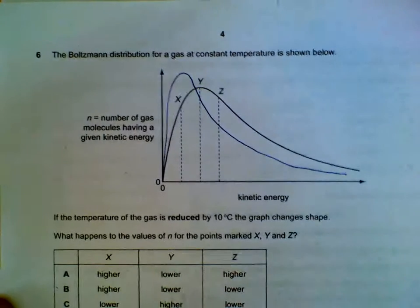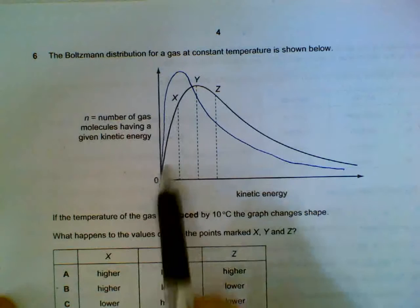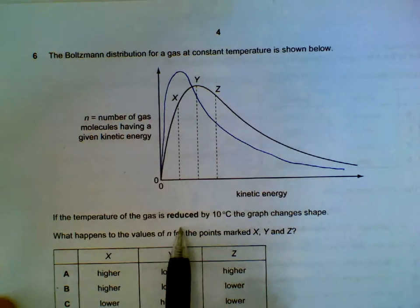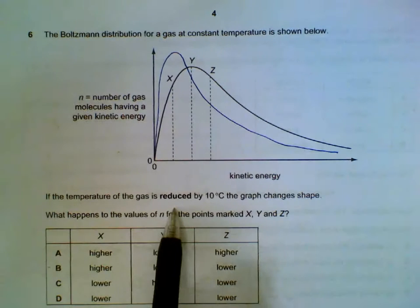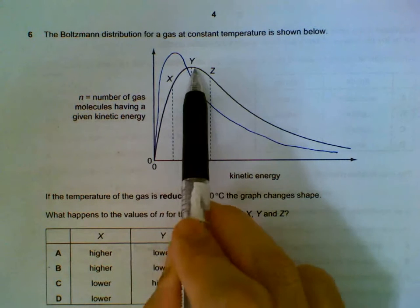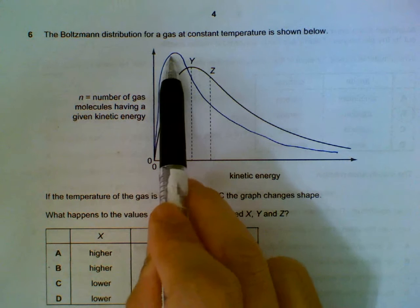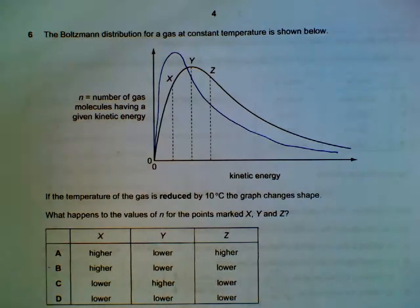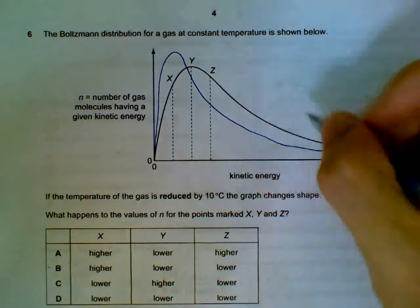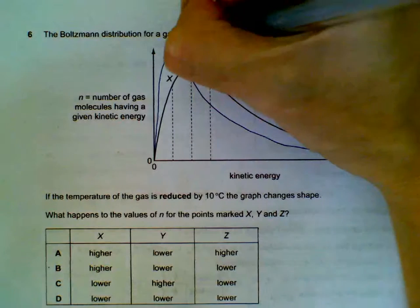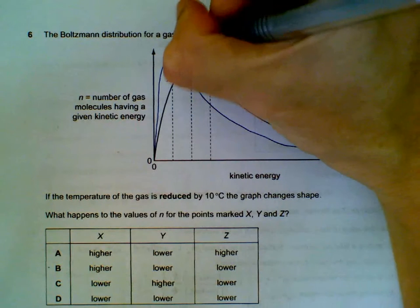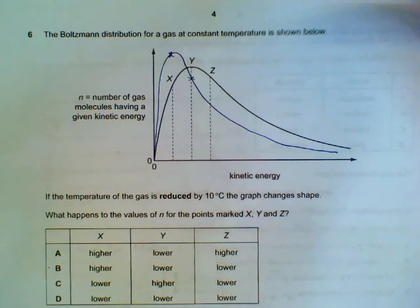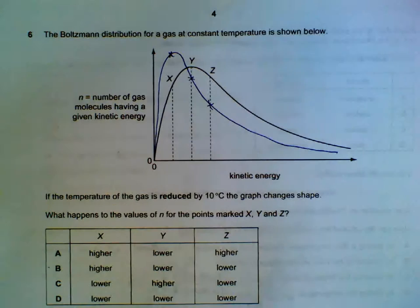Number 6. Boltzmann Distribution. The one in black is the original curve drawn. What happens when we reduce the temperature? When we reduce the temperature, the peak will shift to the left side and the peak will be higher. So we will get the curve that is shown by the blue curve. So what happens to the points? X, Y and Z. X will be located here. So it will be higher. Y will be here. Lower. And Z will also be lower.